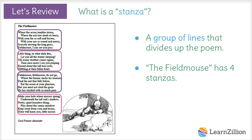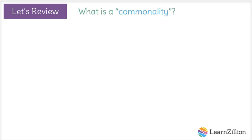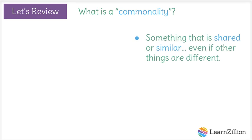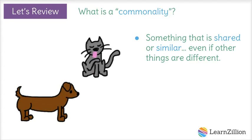As we read the poem's stanzas, we're going to look for things they have in common, or a commonality. A commonality is something that is shared or similar, even if other things are different. For example, a dog, a cat, and a turtle are all different animals, but a commonality they share is that they can be pets. So remember, when you see the word commonality in this lesson, you're looking for something that is similar among different things.